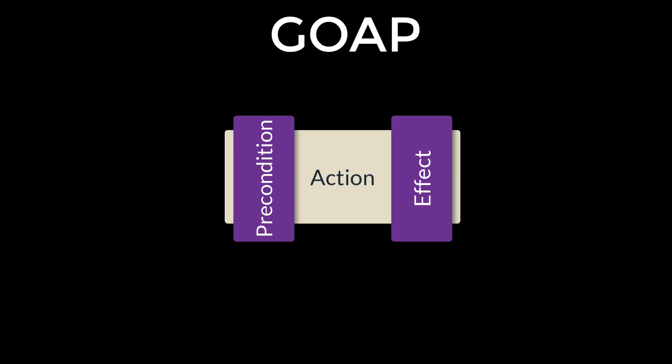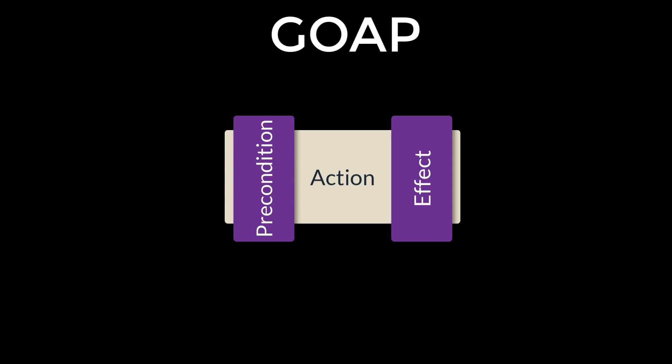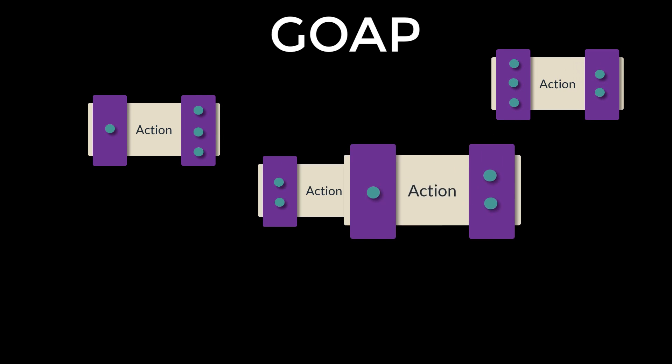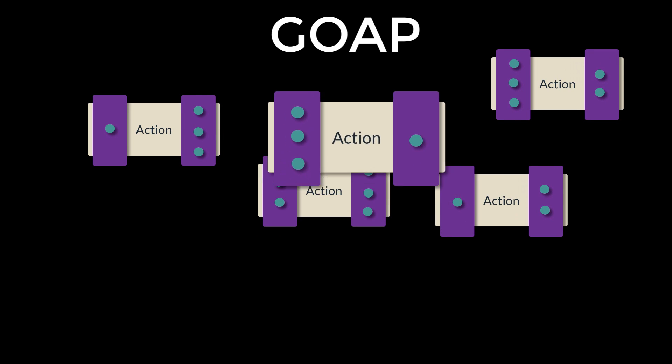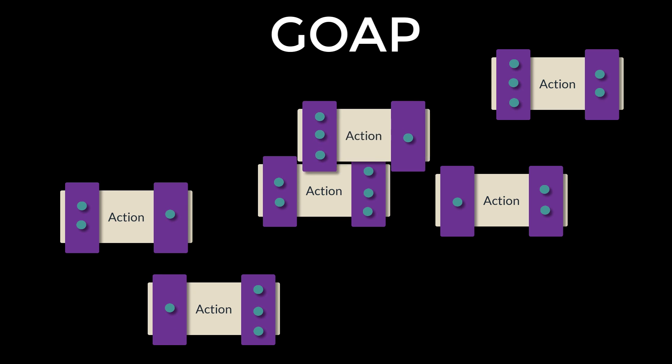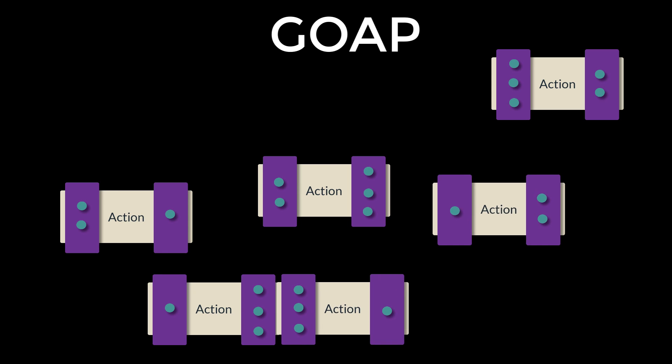Every action in GOAP has a precondition and an effect. The precondition is a state that must be met before the action can take place. The effect is how the action leaves the state of the agent or the world after it has occurred. A set of actions forms a kind of puzzle or set of dominoes where the preconditions can be matched with effects and the effects match with preconditions to create action chains.